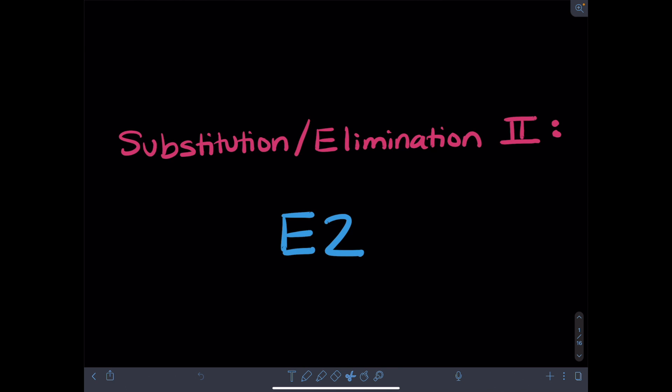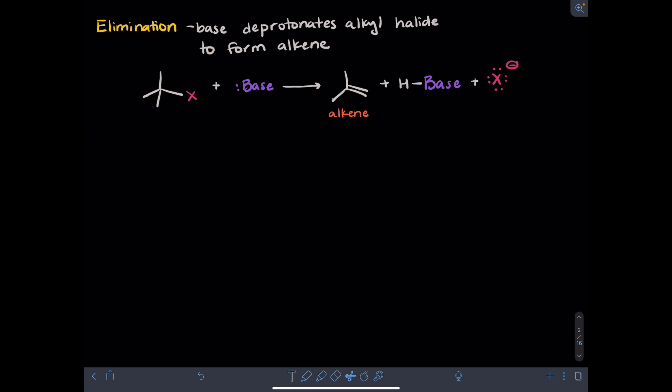Hi folks! The following video is going to talk about an elimination reaction called E2. In an elimination reaction, a base deprotonates an alkyl halide in a way that forms an alkene. Before talking about the E2 reaction, I want to talk a little bit about classifications of alkenes as well as stabilities.